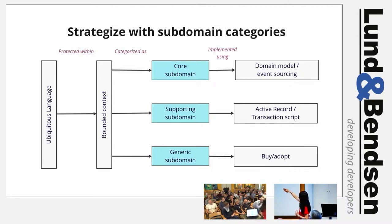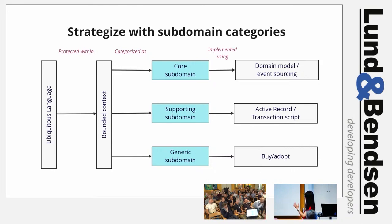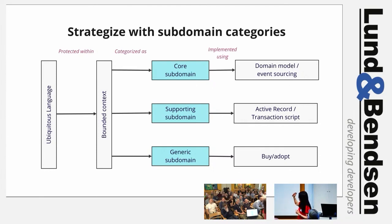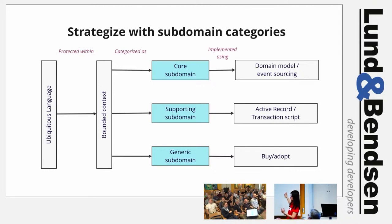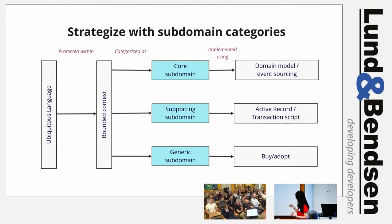The reason we do this in DDD is to guide resource deployment. If it is a core domain, we are justified in using more complex and time-consuming implementation patterns such as the domain model, event sourcing, CQRS, and so forth. For a supporting subdomain — like a product catalog or customer system — we want to make sure it doesn't have too much complexity, so we can use the active record or transaction script patterns. Active record is basically the CRUD pattern; transaction script is basically doing a SQL script in your code. A generic subdomain — like an HR system or CRM system — you would just buy.